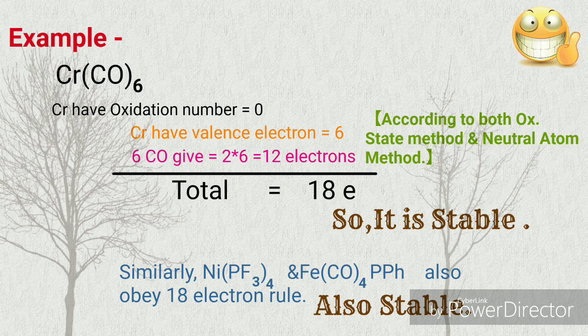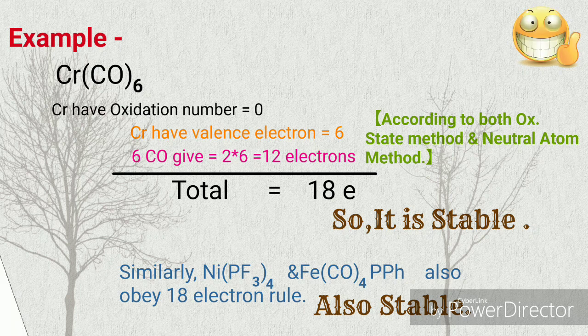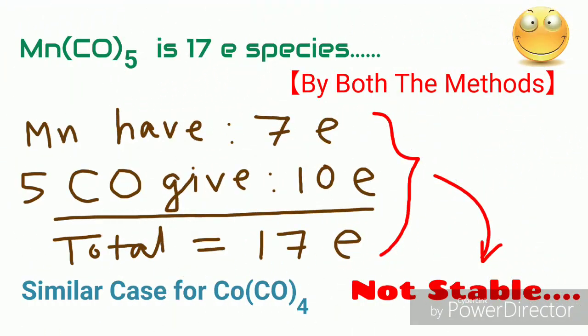But Mn(CO)₅ is a 17 electron species by both the methods, as Mn has 7 valence electrons and 5 CO give 5 × 2 equals 10 electrons, therefore total is 17 electrons. Same case for cobalt tetracarbonyl, which are not stable.